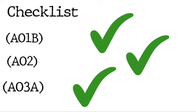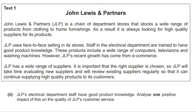We're going to look at some examples — some you may have done as mock exams, in class, or found on the OCR website. The first one is John Lewis. The question is asking about JLP's electrical department where staff have good product knowledge, and it asks you to analyse one positive impact of this on the quality of their customer service. The command term is 'analyse', so there will be an expectation of a logical chain of development. It's only asking for one — students who bring in more than one point won't get extra marks, and it limits the analysis on the initial point that will actually get the marks.